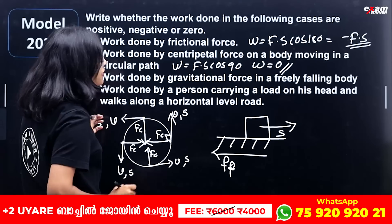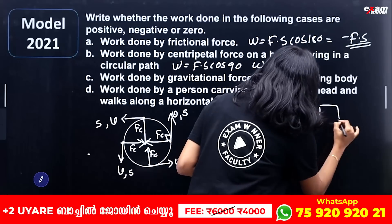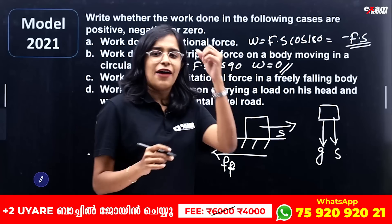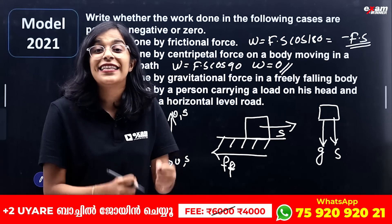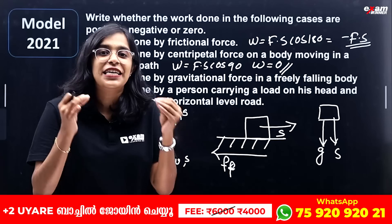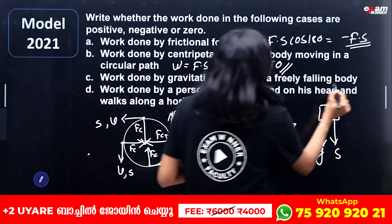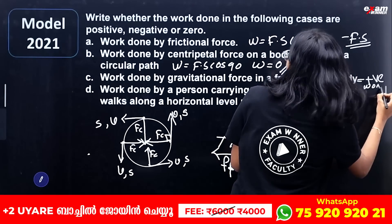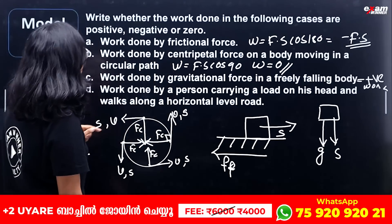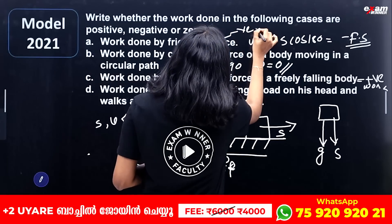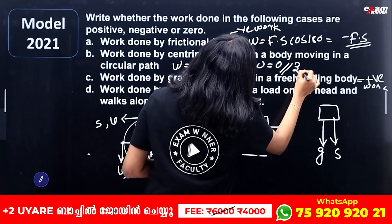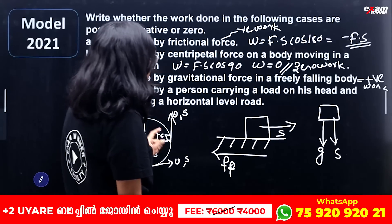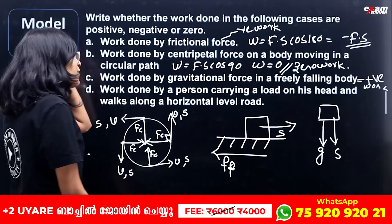Work done by the gravitational force on a freely falling body: gravitational force acts downward and the displacement is also downward, so the angle between them is 0°. Work done W = F × S × cos 0° = positive. Therefore, work done by gravity on a freely falling body is positive work. Summary: friction is negative work, centripetal force is zero work, gravity on falling body is positive work.